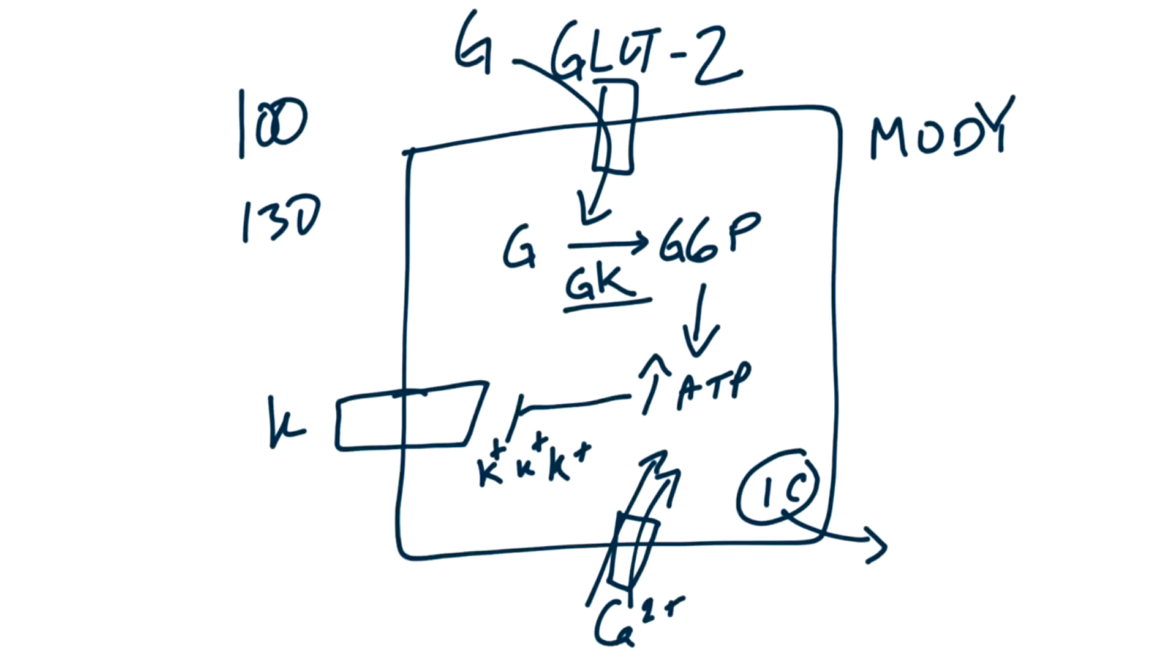Here's a pharmacological tie-in. What drug used to treat type 2 diabetes acts by inhibiting the potassium channels? Sulfonylureas. This includes drugs like chlorpropamide and glipizide. By inhibiting the potassium channel, these drugs trigger depolarization and the release of insulin, which can then lower blood glucose levels.